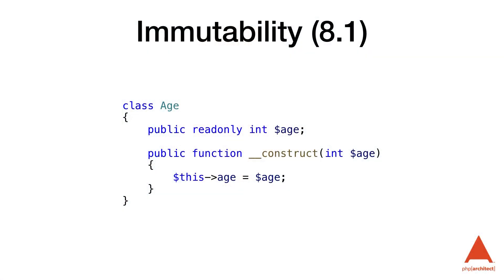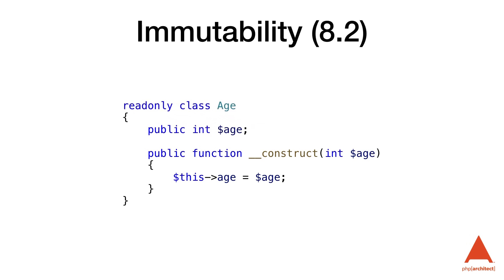Immutability: an immutable object is an object whose state cannot be modified after it's been created. This means that when we're creating a value object, it will always be equal to an equivalent value object. This reduces bugs because a value won't change during the request, especially with multiple threads of execution. PHP 8.1 provides support for this by using the read-only property on our attributes. PHP 8.2 is going to be adding support for read-only classes, which will help us design these. Check out our video for what's new in PHP 8.2 to know more.